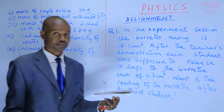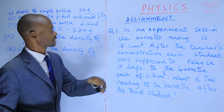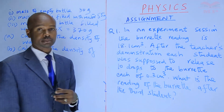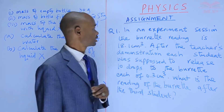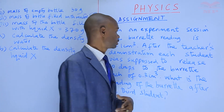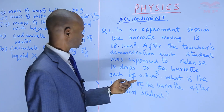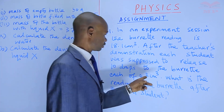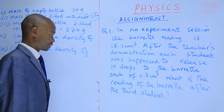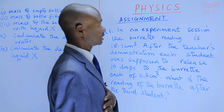Now quickly through the questions which will work as the assignment. Question one: In an experiment session, the burette reading is 18.1 cubic centimeters. After the teacher's demonstration, each student was supposed to release 10 drops from the burette, each of 0.3 cubic centimeters. What is the reading of the burette after the third student?